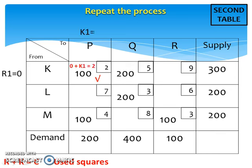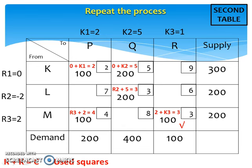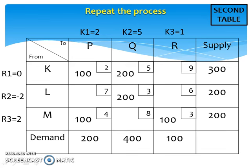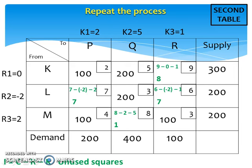So these are all R's and K's that we got at the second table. Then we proceed to calculating the improvement index, using the formula I equals C minus R minus K, calculated for all unused squares. So these are the improvement indices for the second table. Here we can see that all improvement indices are positive. Therefore, it means that we have reached an optimal solution.